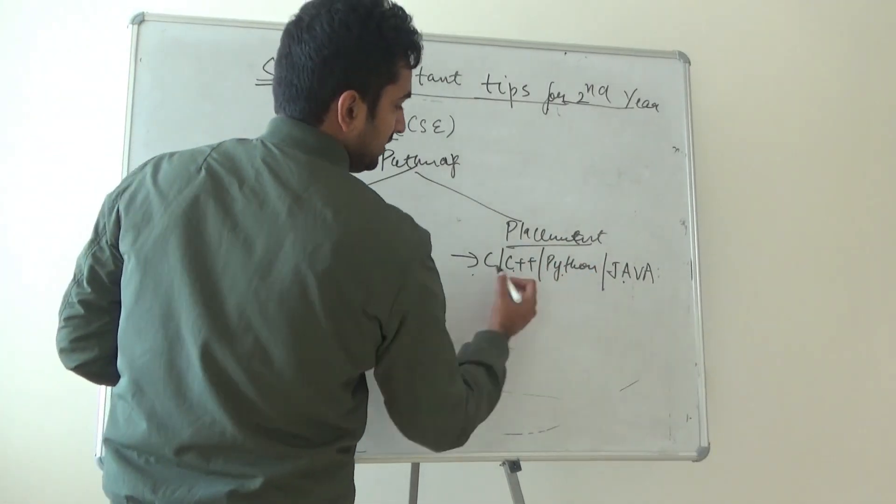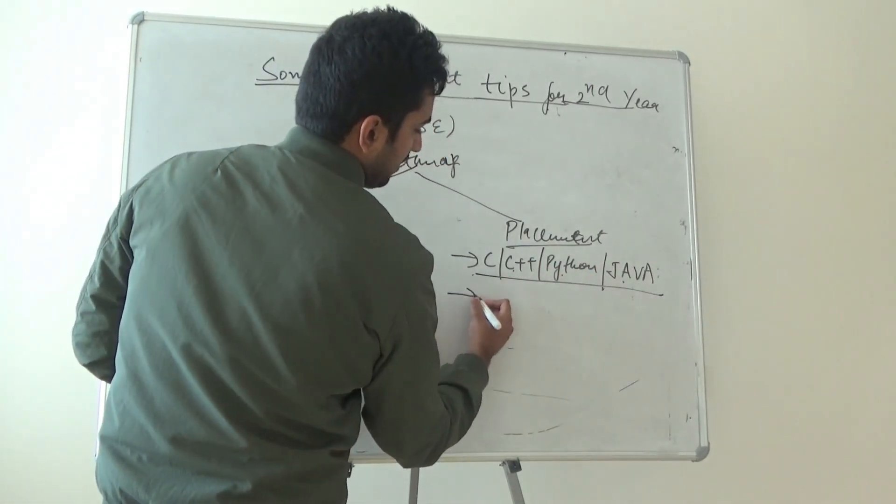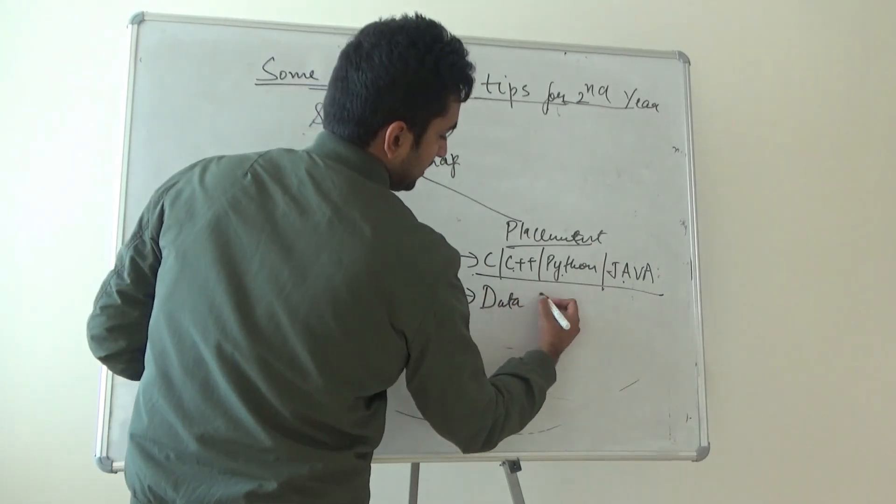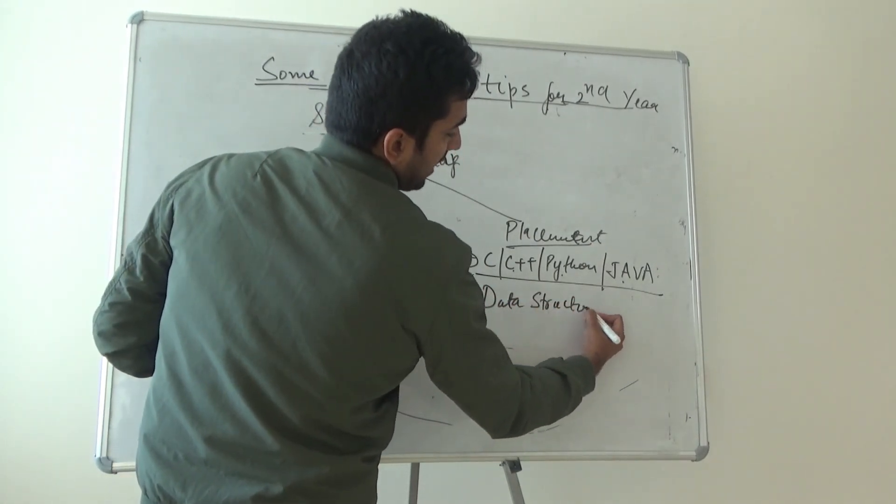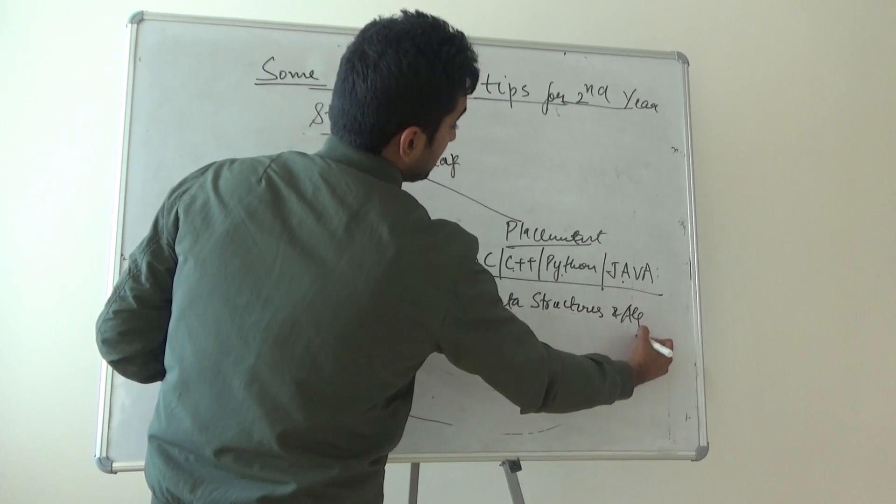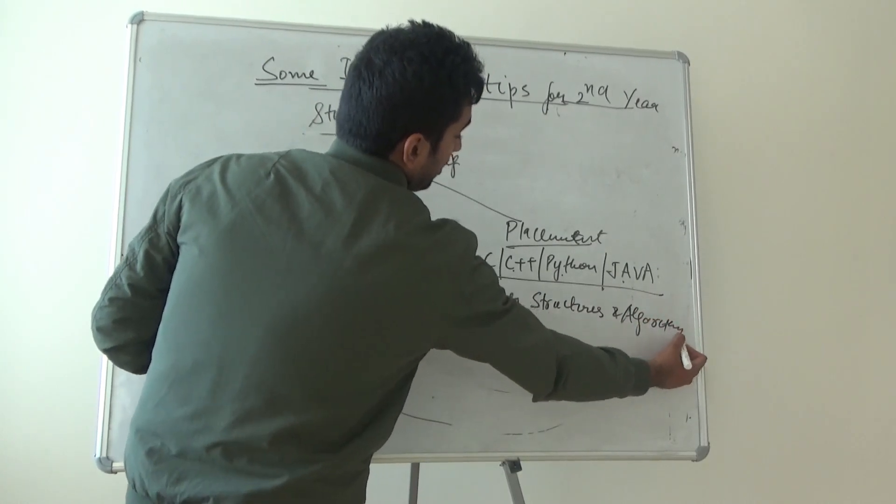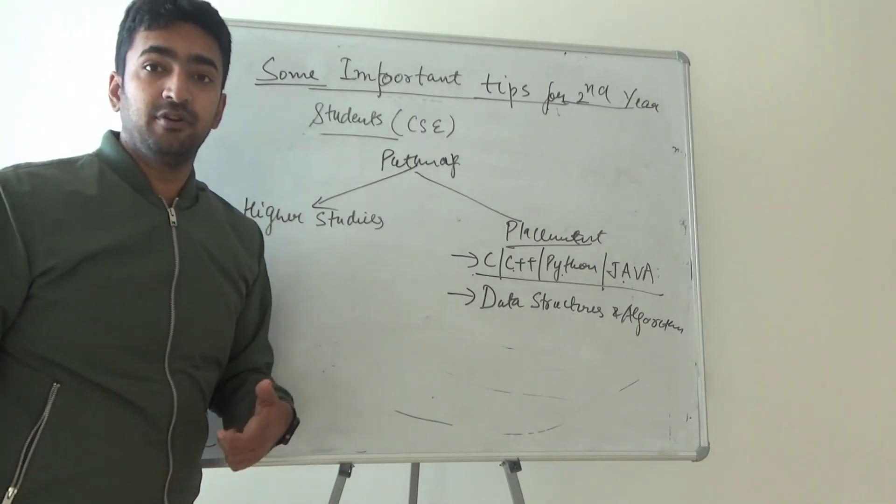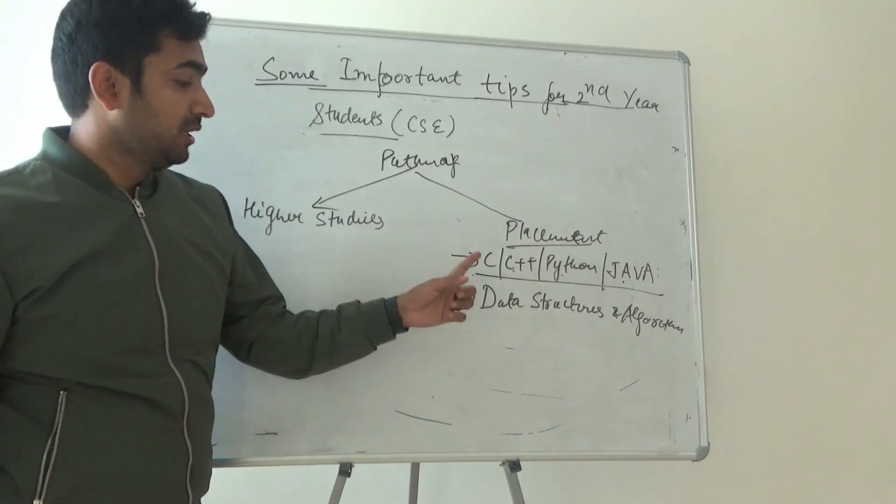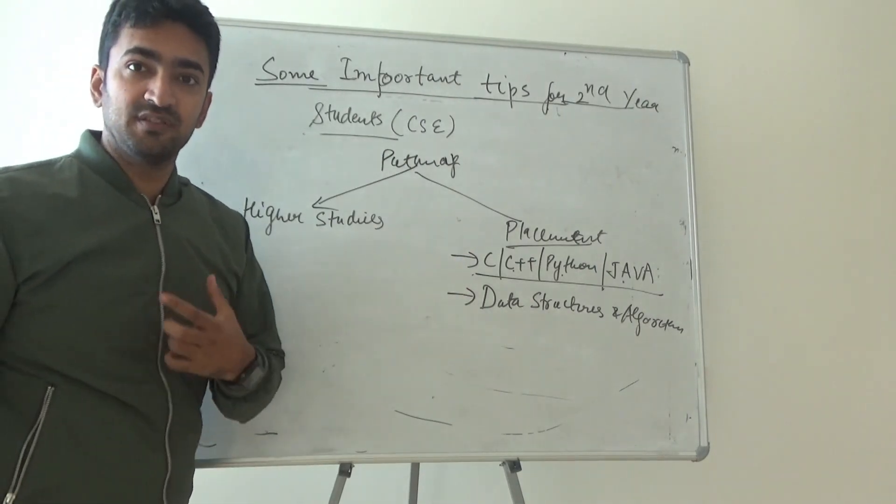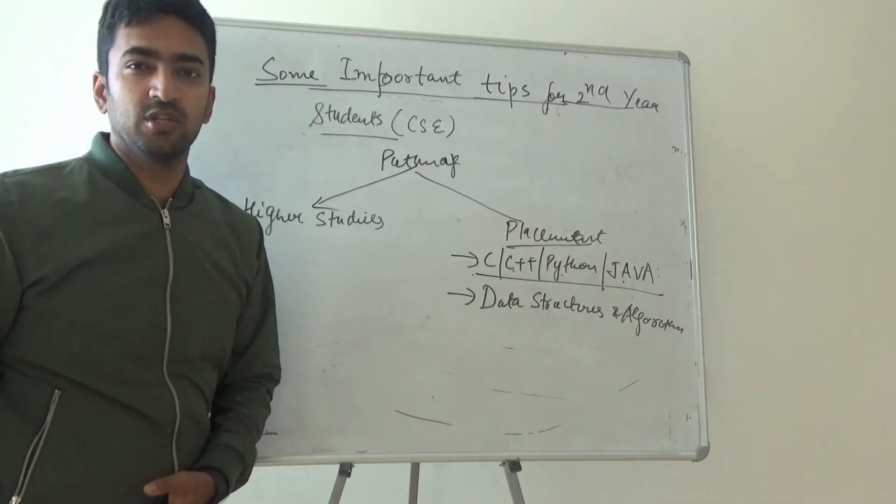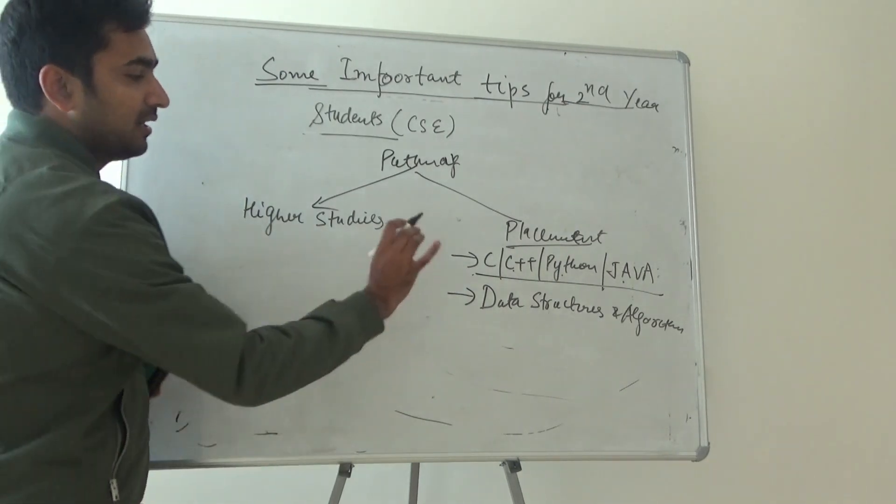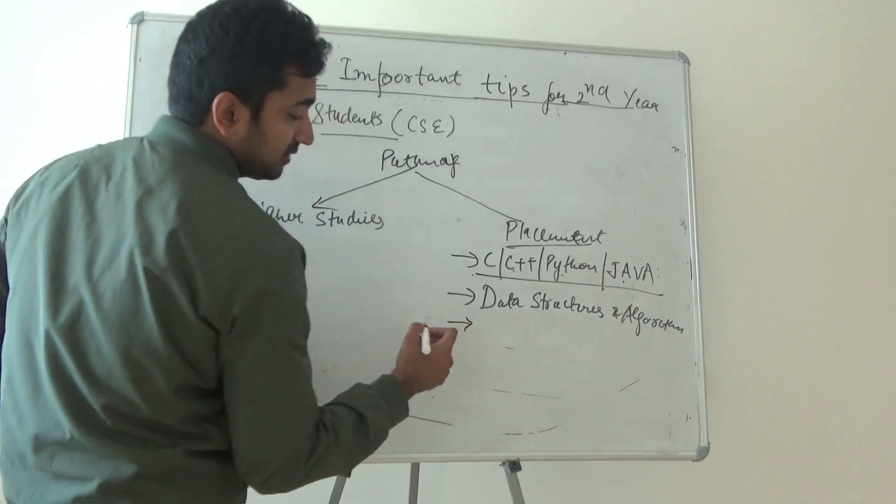C, C++, Python, and Java are programming subjects. A very important subject is data structures and algorithms. This is a very important subject when we are talking about any kind of placement.